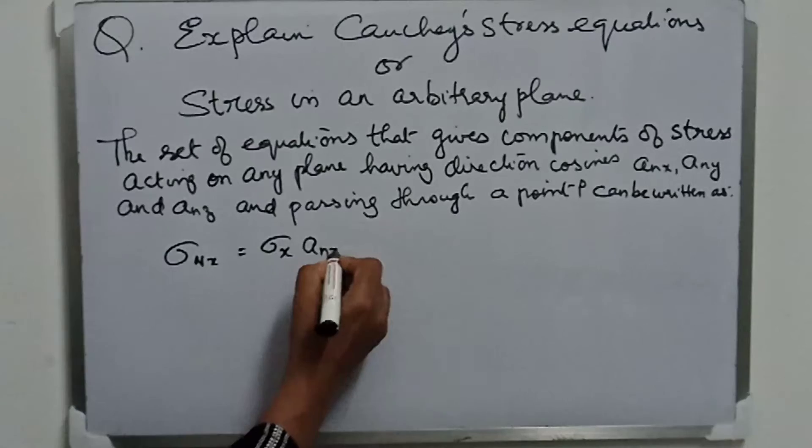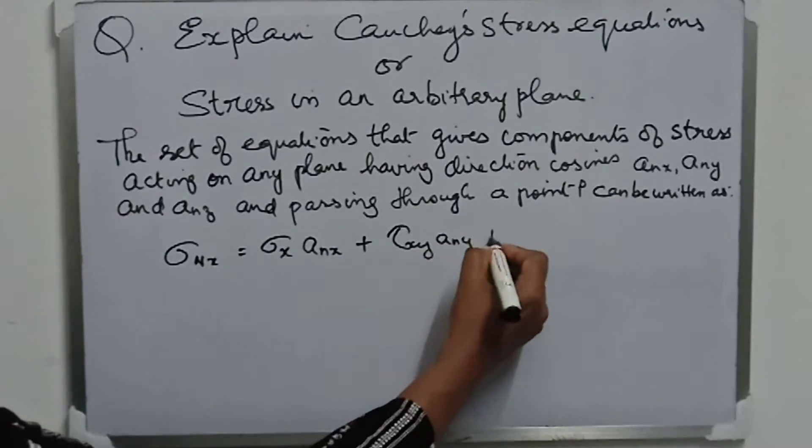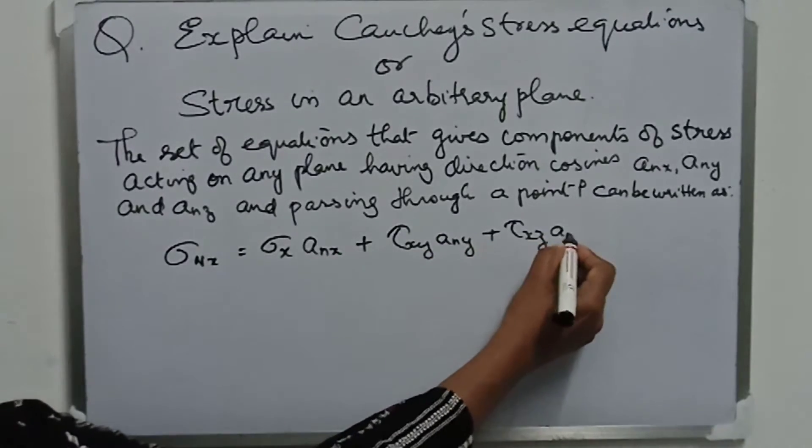σnx equals σx times anx plus τxy times any plus τxz times anz.